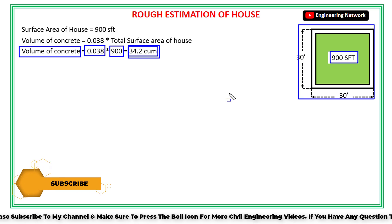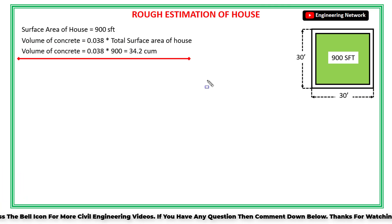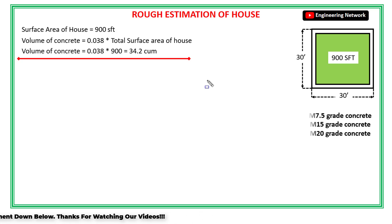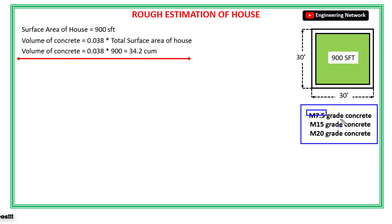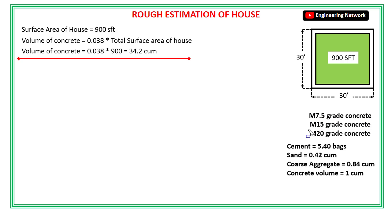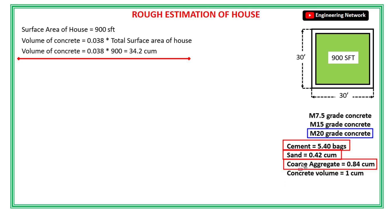Now let's talk about the rough estimation of materials — cement, sand, and coarse aggregate — which will be used in 34.2 cubic meters of concrete. In house construction we normally use three grades: M7.5, M15, and M20 grade concrete. Let's assume M20 grade concrete is used. In M20 grade concrete, per 1 cubic meter: the number of cement bags is 5.40, the quantity of sand is 0.42 cubic meters, and the quantity of coarse aggregate is 0.84 cubic meters.